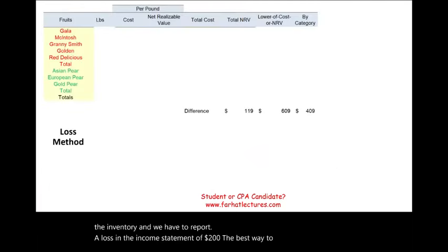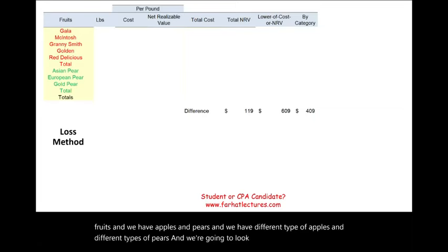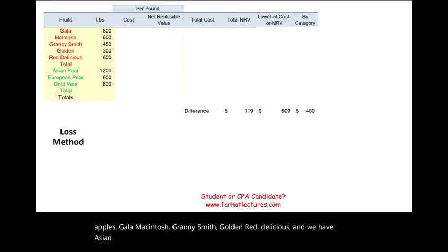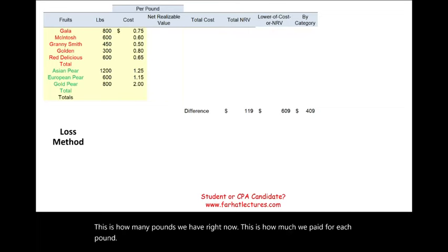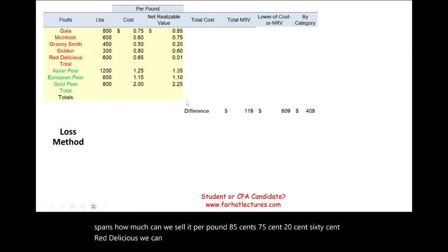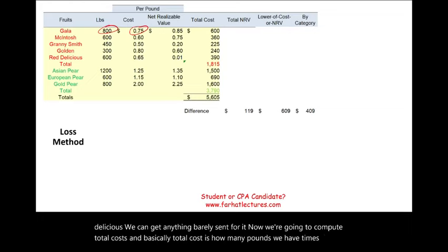To illustrate further, assume we sell fruits — apples and pears — with different varieties. We have their quantities in pounds, the cost per pound, and the net realizable value per pound. For example, red apples are $0.85 NRV, Gala $0.75, Granny Smith $0.20, Golden $0.60, and Red Delicious barely a cent. Total cost is computed as pounds times cost per pound — for example, $600 for one variety.